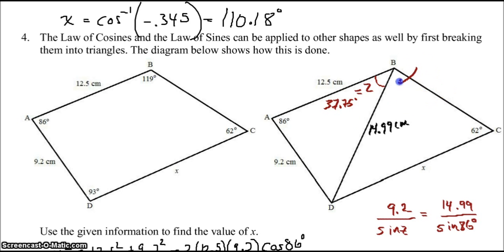Okay, 37.75 degrees is this angle Z. Then notice that this angle, since all the way across angle B is 119 degrees, this one would be 119 minus 37.75. 81.25 degrees.